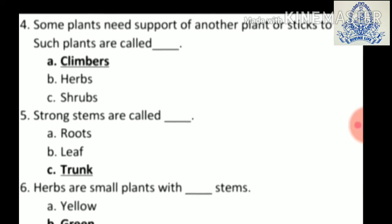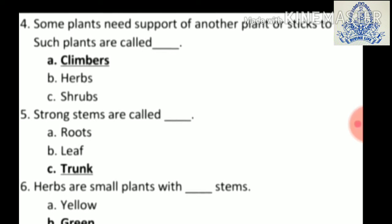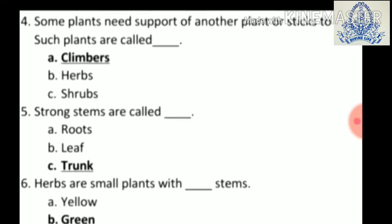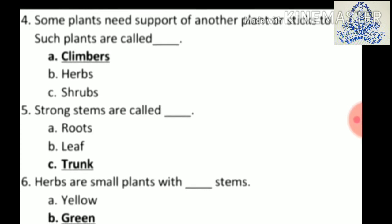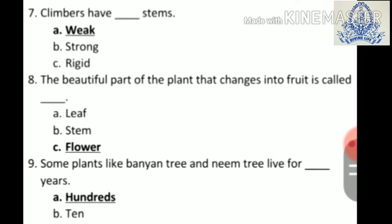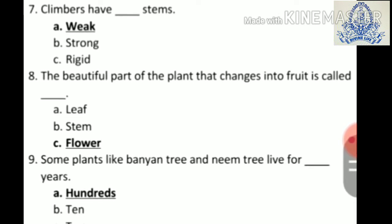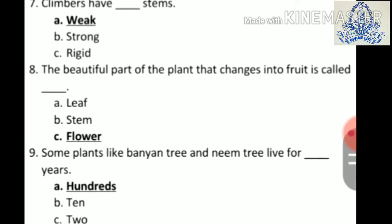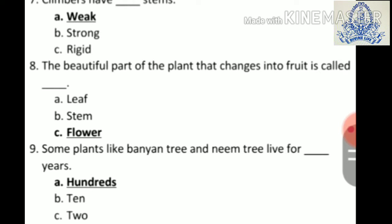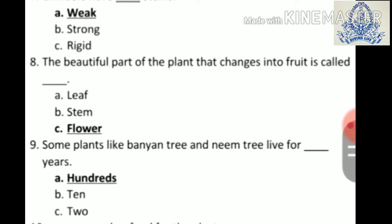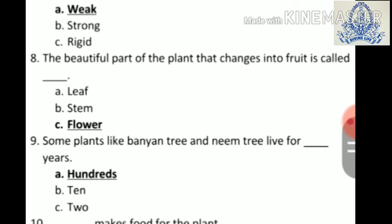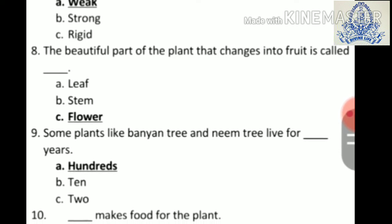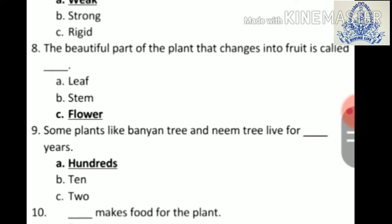Sixth: herbs are small plants with dash stems — a) yellow, b) green, c) blue. Answer is b) green. Seventh: climbers have dash stems — a) weak, b) strong, c) rigid. Answer is a) weak. Eighth: the beautiful part of the plant that changes into fruit is called dash — a) leaf, b) stem, c) flower. Answer is c) flower.